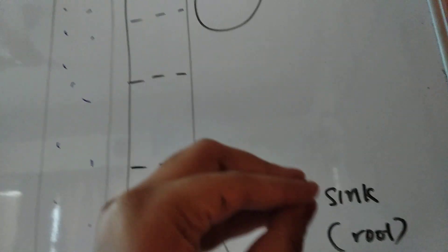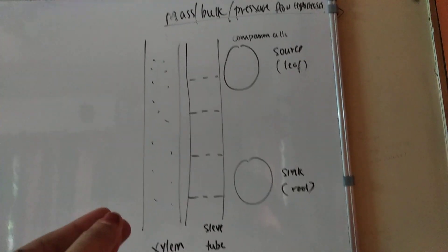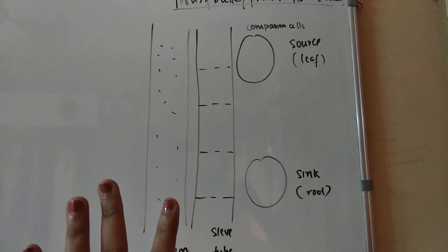So the leaf has to send its food, or its sucrose, to the sink which is the root. Now how is this done? It's done by the mass, bulk, or pressure flow hypothesis.